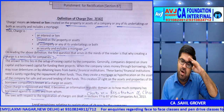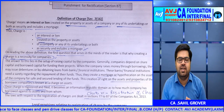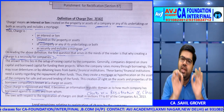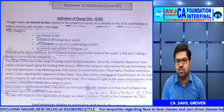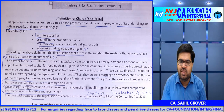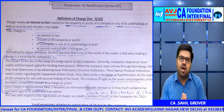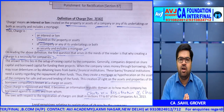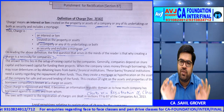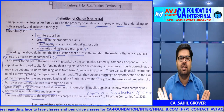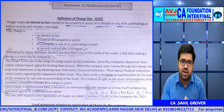Once it is public information, every person who deals with this company's asset — whether buying it or taking a loan against it — will be deemed to have knowledge. For example, if the company goes to State Bank of India to take another loan against the same asset, SBI will be deemed to have knowledge of the charge already registered in favor of Punjab National Bank. As per Section 80 of Companies Act 2013, the charge becomes public information and any person dealing with the assets of the company is deemed to be aware of this charge from the date of registration.